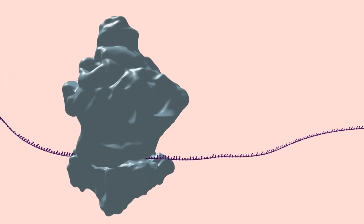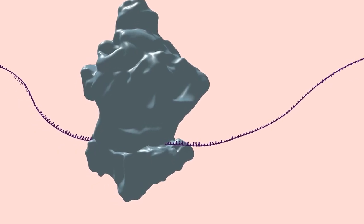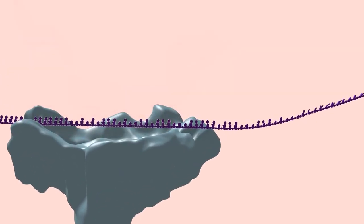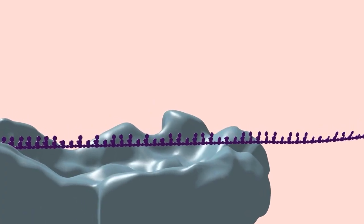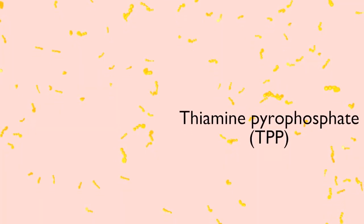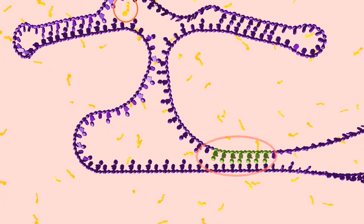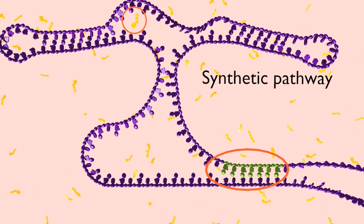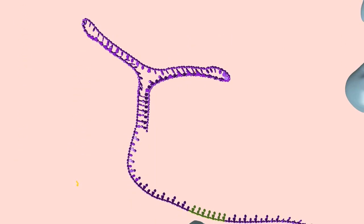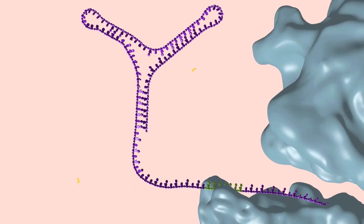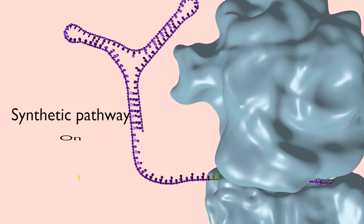As an example, in many bacteria, thiamine biosynthesis genes are directly regulated by riboswitches in their five prime leader that modulate the accessibility of the ribosome binding site, the Shine-Dalgarno motif, to ribosomes. When thiamine pyrophosphate (TPP) is abundant, the riboswitch is bound by TPP and the Shine-Dalgarno motif is sequestered. As a result, no new biosynthetic proteins are made. When levels of TPP are low, the riboswitch is no longer bound by TPP and the Shine-Dalgarno sequence is available for recognition by ribosomes and for the synthesis of the relevant biosynthetic proteins.